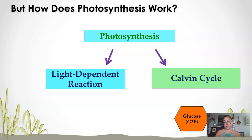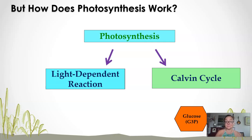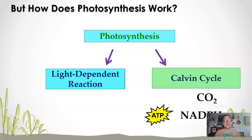The Calvin-Benson cycle is called the dark reaction or the light independent reaction. It doesn't mean that it happens at night. What it means is that it doesn't directly require light, but it does need the light dependent reaction to occur first, because it relies on that ATP and NADPH.